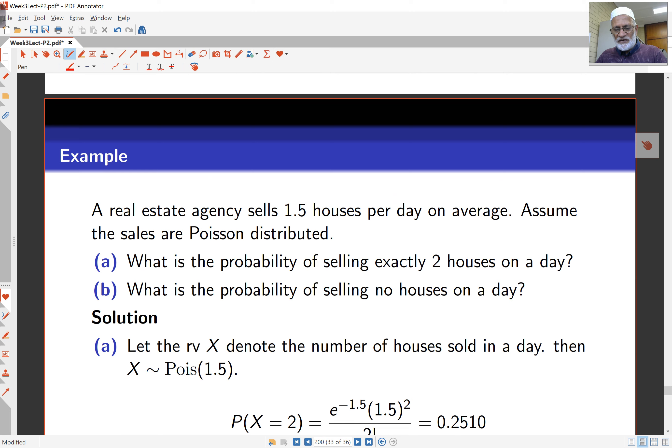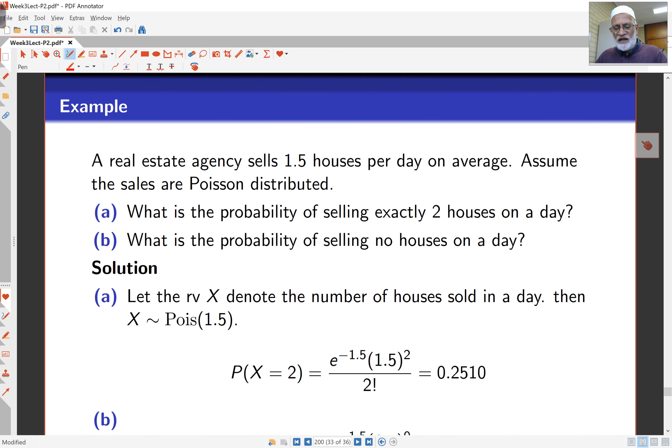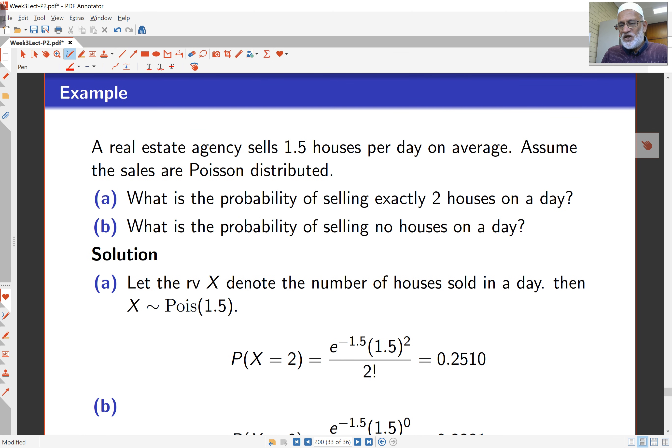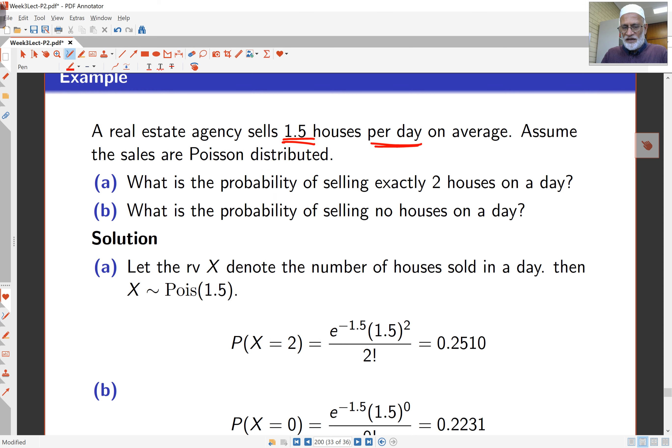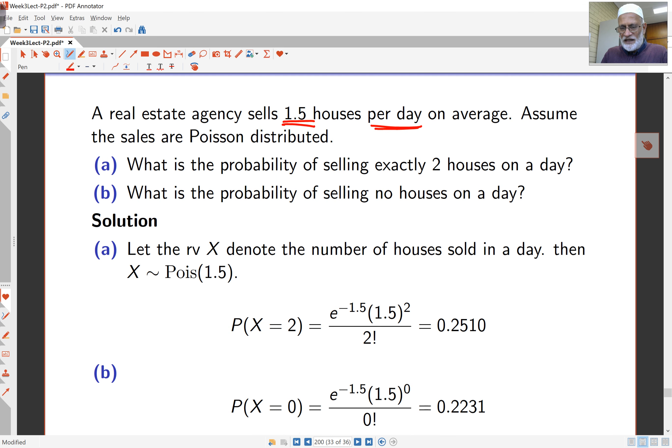Examples here. Real estate agency sells 1.5 houses per day on average. So here my average is this, and my per day is my volume. Assume the sales are Poisson distributed. Probability of selling exactly two houses in a day. So then my random variable X is the number of houses sold in a day. Then X is Poisson. We use this notation here, POIS. And the mean is what we specify here. This is the mean number of sales in the given volume.